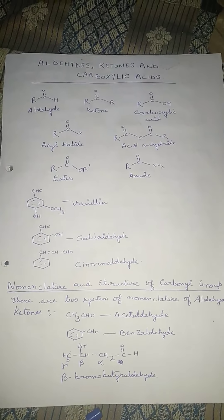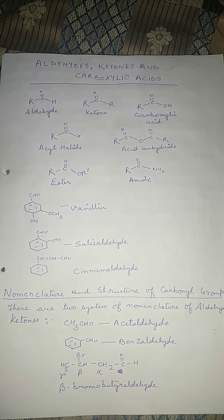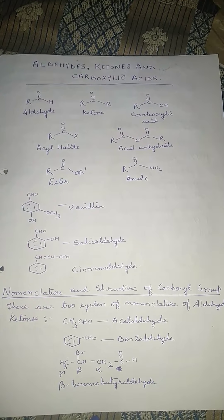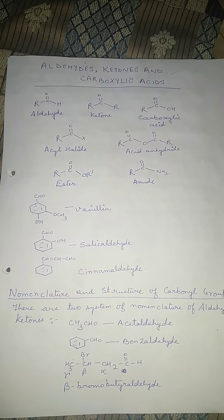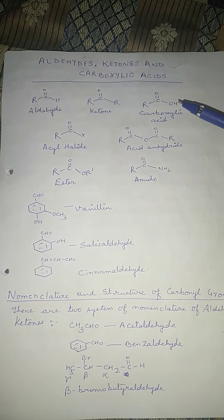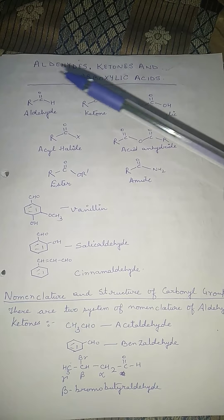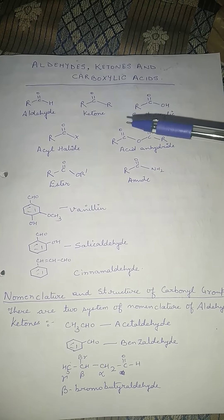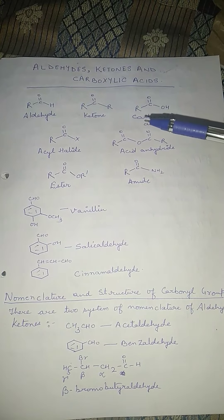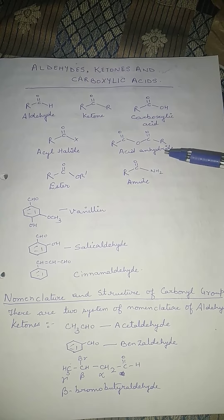First, I have written a few basic structures. Aldehyde is R-C(=O)-H, ketone is R-C(=O)-R, and carboxylic acid is R-C(=O)-OH. The C=O group is known as the carbonyl group, which is present in aldehydes, ketones, carboxylic acids, acyl halides, acid anhydrides, esters, and amides.